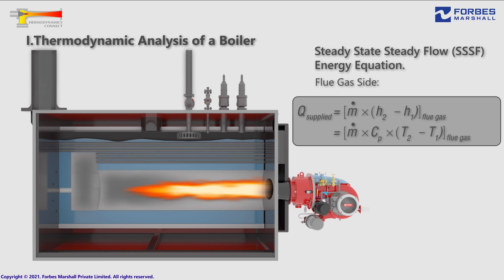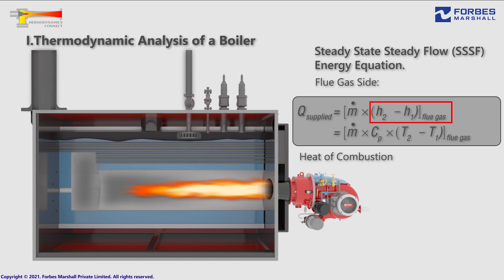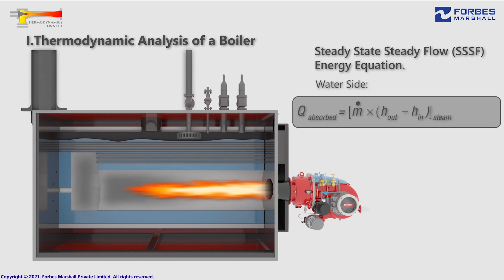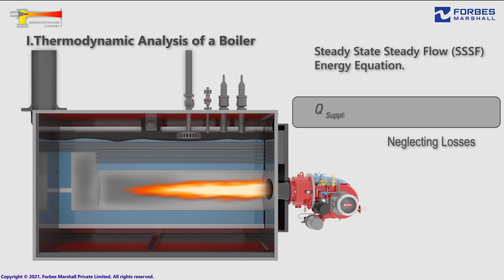Thus, in a boiler, for the flue gas side, the heat supplied is the heat supplied by the combustion of the fuel, which is essentially the change in enthalpy of the flue gas as it loses its heat from the highest temperature point at the burner to the lowest temperature point at the exit of the third pass. The heat absorbed by water is the difference in enthalpy of inlet water and produced steam. Finally, neglecting losses, we conclude that the heat supplied by the flue gases inside the boiler is the same as the heat gained by the boiling water under the steady state and steady flow conditions.